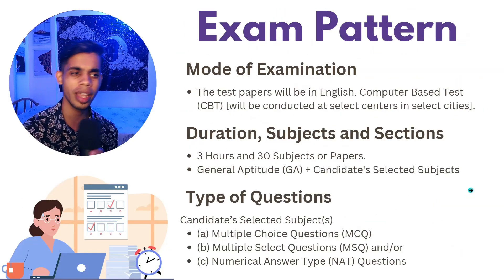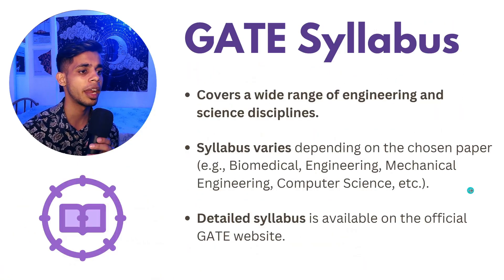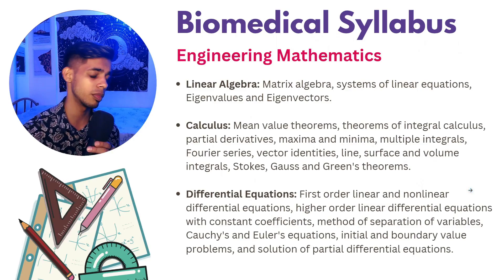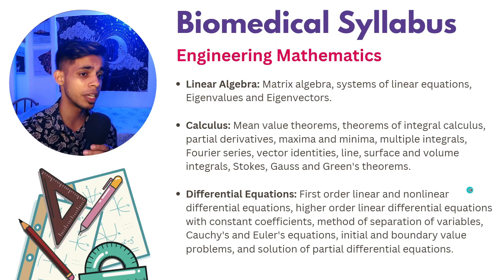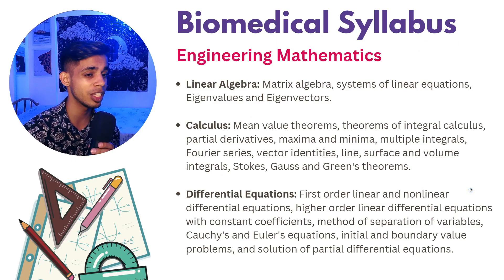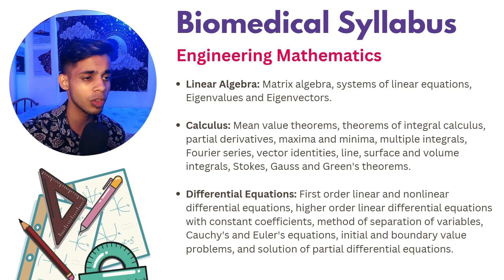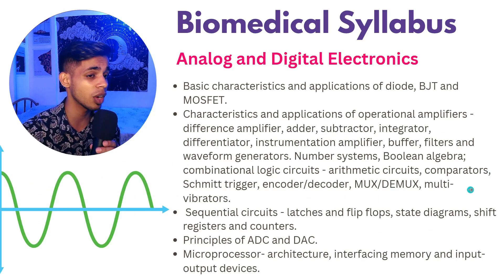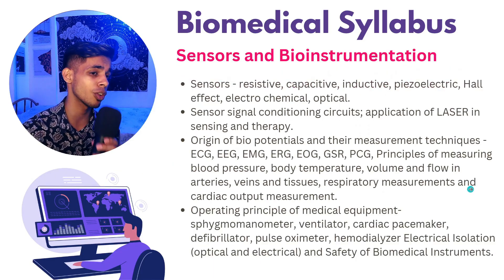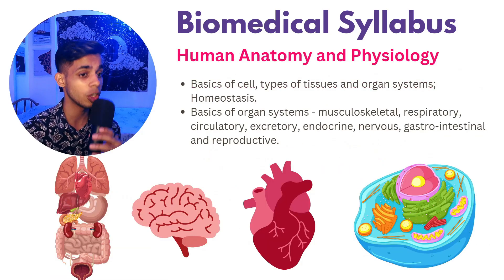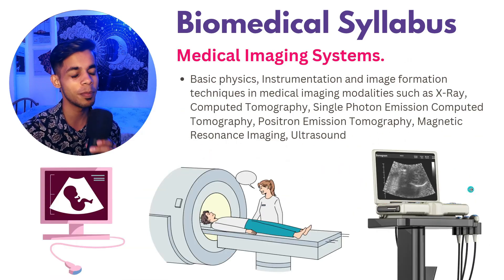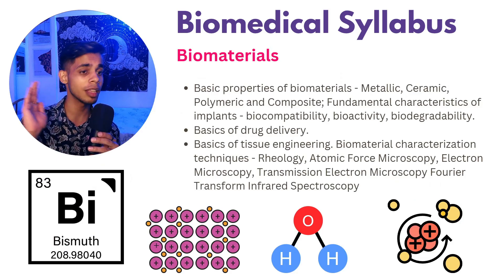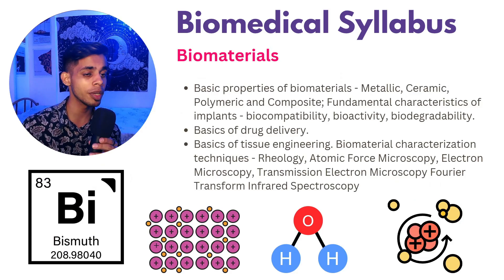To summarize, this video has covered the basic details of the GATE exam: what it is, why you should write it, the exam pattern, and the gate syllabus. For biomedical engineering, the main topics are engineering mathematics, electrical circuits, signals and systems, analog and digital electronics, measurements and control systems, sensors and bio-instrumentation, human anatomy and physiology, medical imaging systems, biomechanics, and biomaterials.